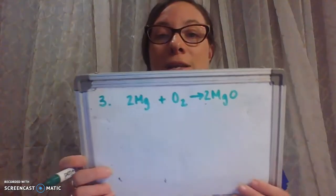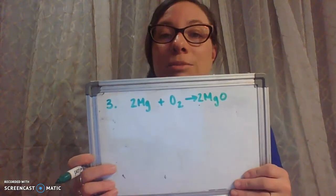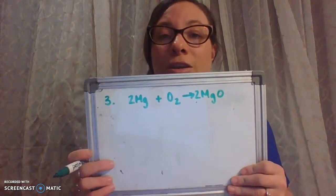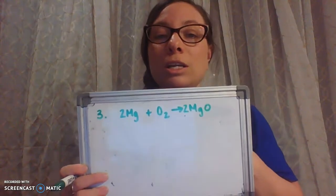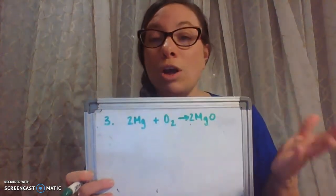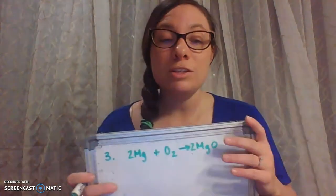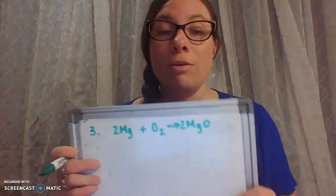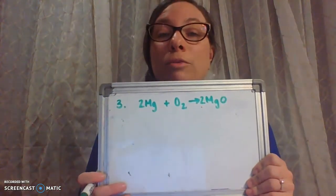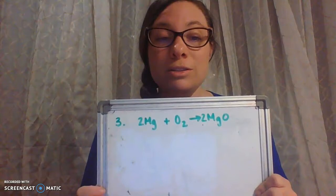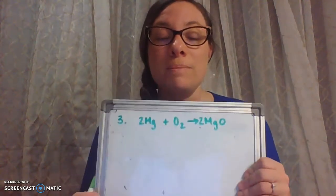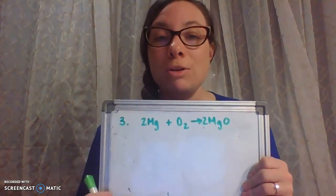The first thing we're going to need to do is write a balanced chemical reaction. Two magnesiums plus one oxygen forms two magnesium oxides. States of matter are really important here, so make sure you know what the states of matter are for this reaction. For honor students, make sure you include all of the states of matter in your balanced chemical equations.